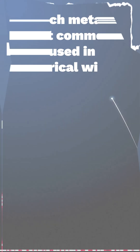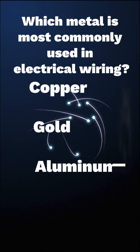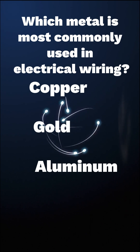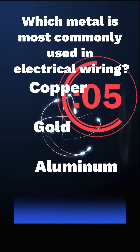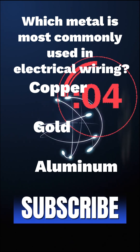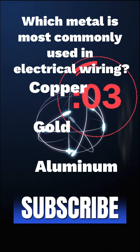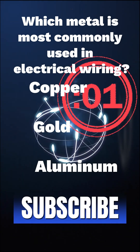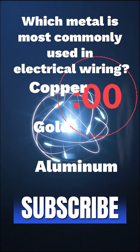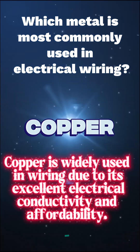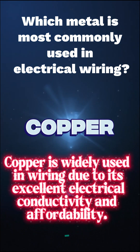Which metal is most commonly used in electrical wiring? The answer is copper. Copper is widely used in wiring due to its excellent electrical conductivity and affordability.